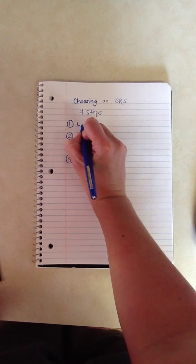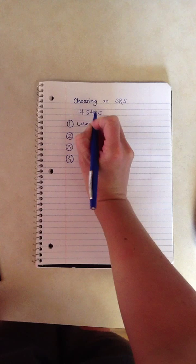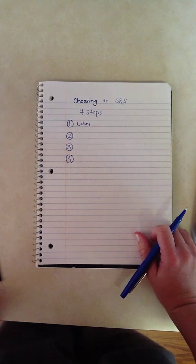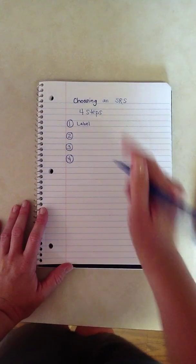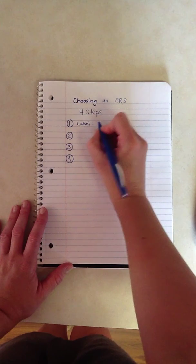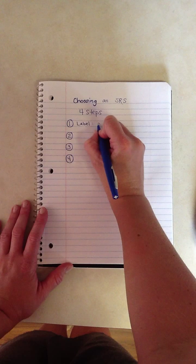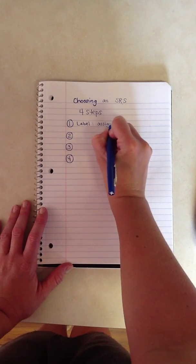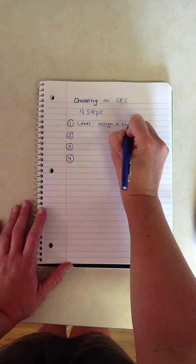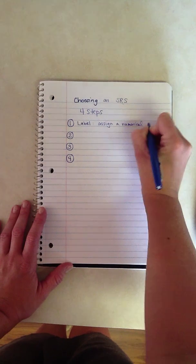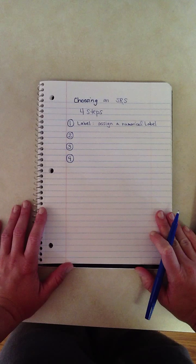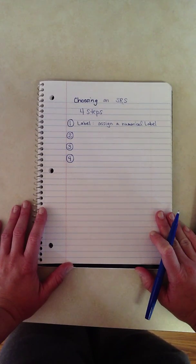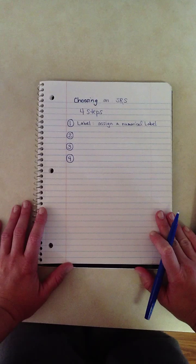The first thing that you want to do is create labels. So you want to take all of the subjects that are in your study or experiment and assign everyone a number, a numerical label. So if I have, for example, a hundred people in my study, I'm going to assign every person a three digit number.